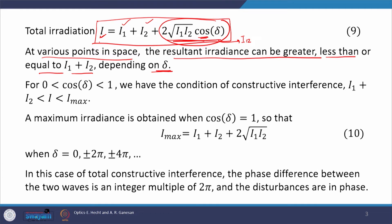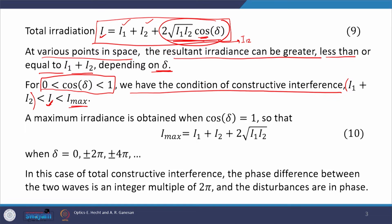Similarly, the places where total irradiance is smaller than I₁ + I₂ are called places of destructive interference. Now, if cos δ is between 0 and 1, we have the condition of constructive interference, and the resultant irradiance I lies between I₁ + I₂ and I_max. The maximum irradiance is I_max = I₁ + I₂ + 2√(I₁I₂).